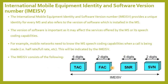International Mobile Equipment Identity and Software Version Number — IMEI SV. The IMEI SV provides a unique identity for every MS and also refers to the version of software installed in the MS, as the software version may affect the services offered by the MS or its speech coding capabilities. For example, mobile networks need to know the MS speech coding capabilities when a call is being made, such as half rate or full rate. This will be indicated by the IMEI SV.